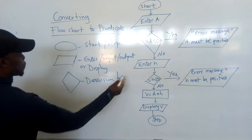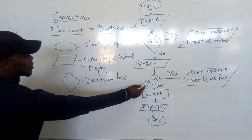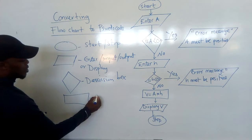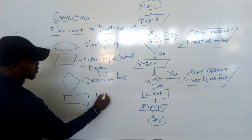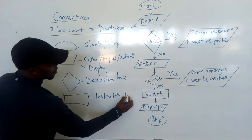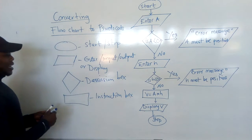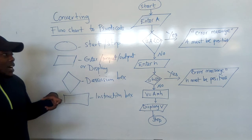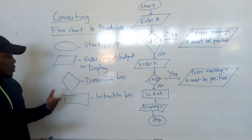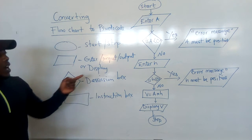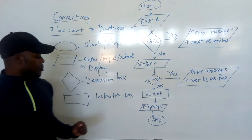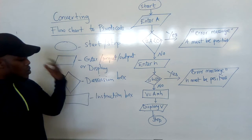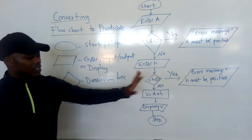And then what other shape? This one — rectangle. A rectangle is an instruction box. Under the decision box, this is where a decision of a computer is done. Like as it is processing, it will make its decision at this stage. And the instruction box will instruct something to come out.